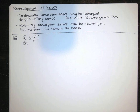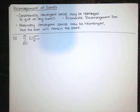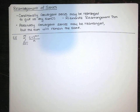So here are a couple of facts, and this kind of blew my mind the first time I heard it. A conditionally convergent series can be rearranged — we can change the order that we're adding things — and it can be rearranged in such a way to give us any sum. Any finite number, any real number you want, we can rearrange a series and make that series equal that sum. That's called Riemann's Rearrangement Theorem.